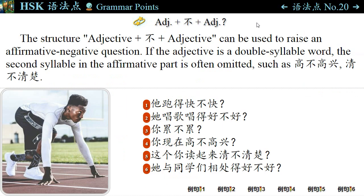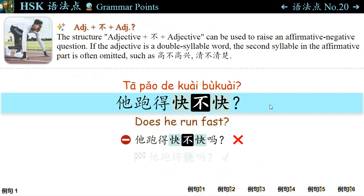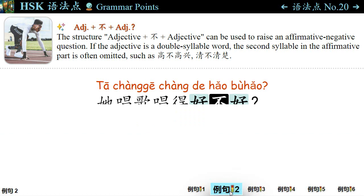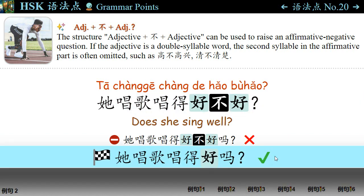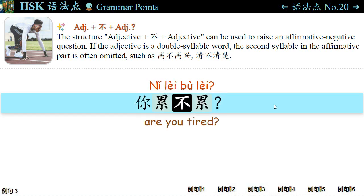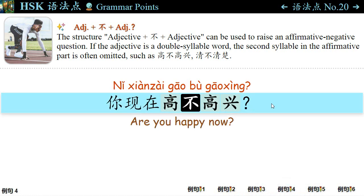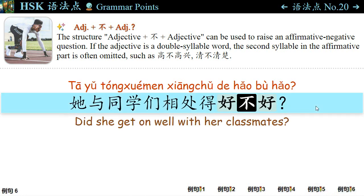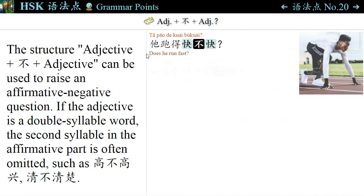语法点二十: The structure Adjective + 不 + Adjective can be used to raise an affirmative-negative question. For example: 他跑得快不快? — Note: 他跑得快不快吗 is wrong. You can also ask, 他跑得快吗? 他唱歌唱得好不好? — You can also say, 他唱歌唱得好吗? 你累不累? — Are you tired? 你现在高不高兴? — If the adjective is a double-syllable word, the second syllable in the affirmative part is often omitted, such as 高不高兴. 这个你读起来清不清楚? — Is it clear enough for you to read? 他与同学们相处得好不好? — Did he get on well with his classmates? The sentence pattern is: Adjective + 不 + Adjective.